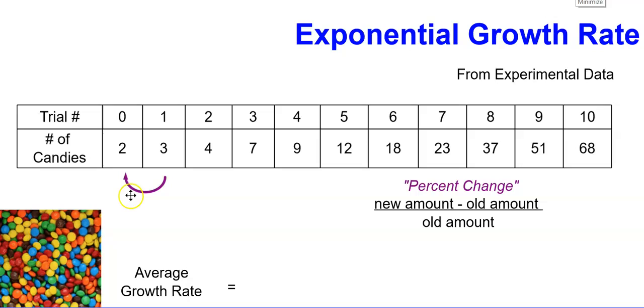From 3 to 2, the difference from the new amount to the old amount is 3 minus 2, divided by the original amount. So we get 3 minus 2 is 1 over 2, which is one half or 0.5.